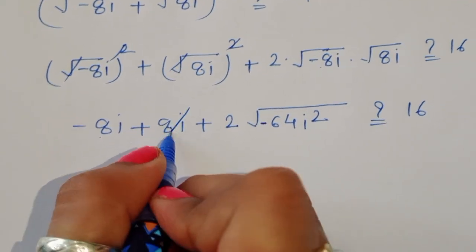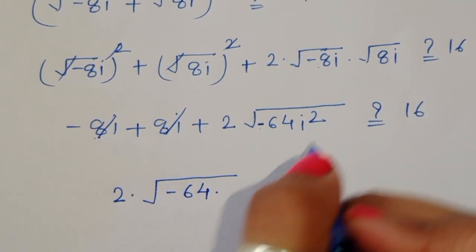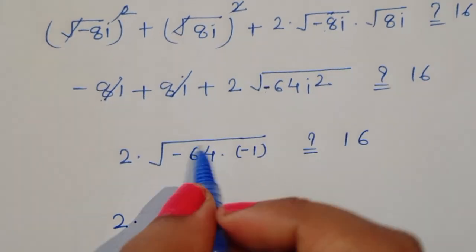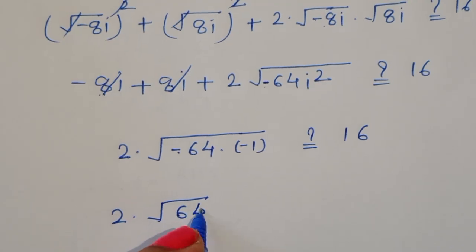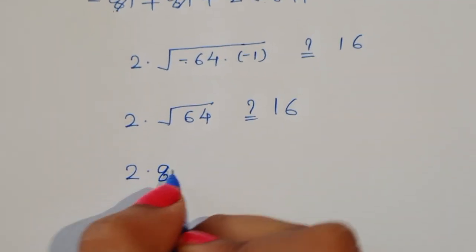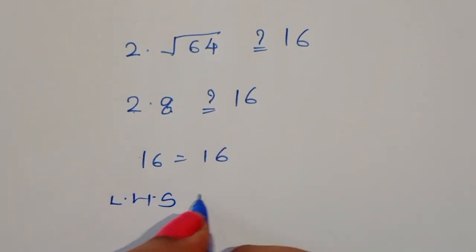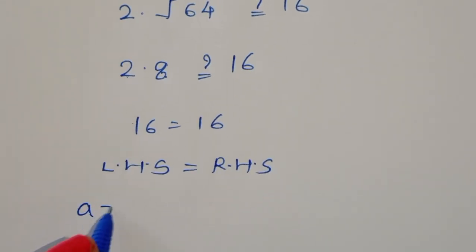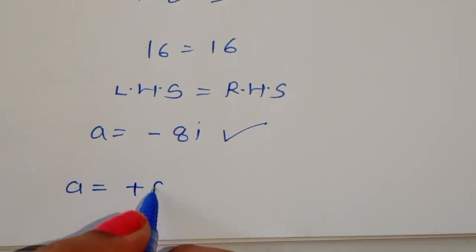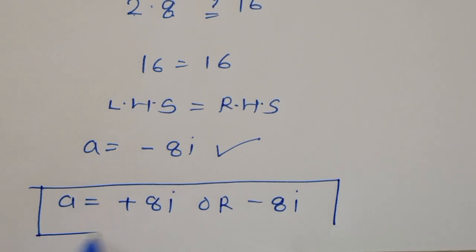The −8i and +8i cancel. Then 2 × √(−64i²): since i² = −1, we get 2 × √64 = 2 × 8 = 16. So LHS = RHS, confirming a = −8i is also correct. The value of a = +8i or −8i.